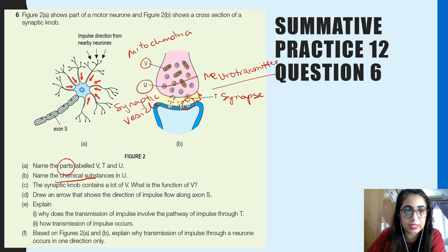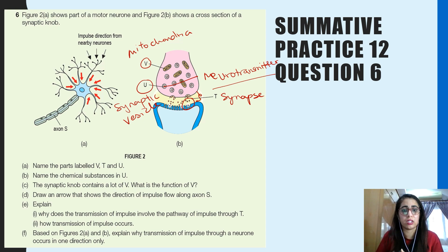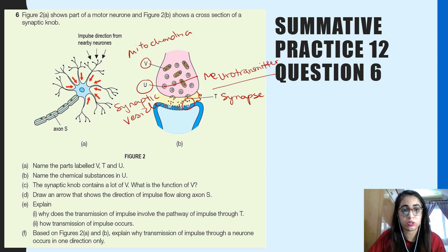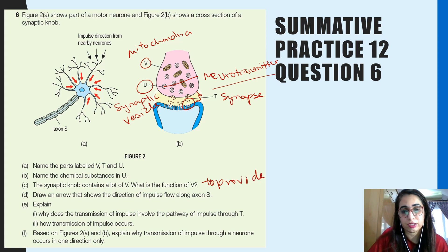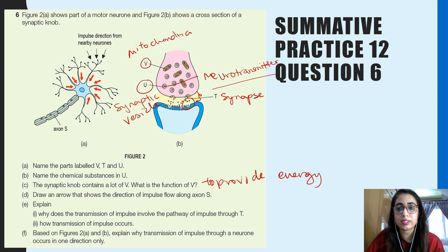The synaptic knob contains a lot of V — mitochondria. The function of V (mitochondria) is to provide energy for electrical impulse transmission.